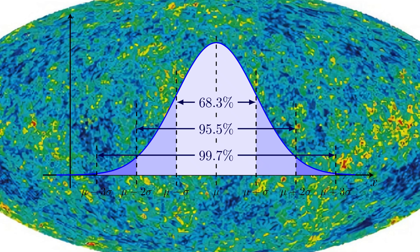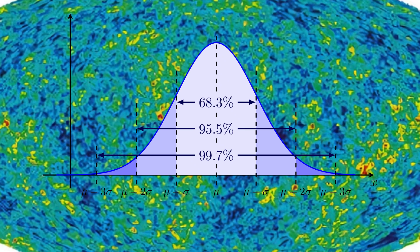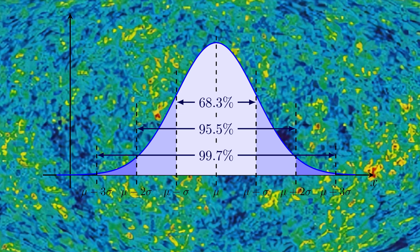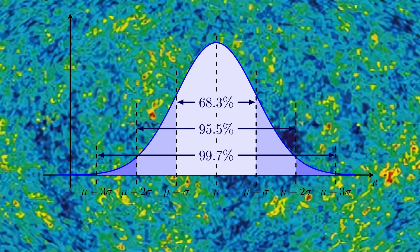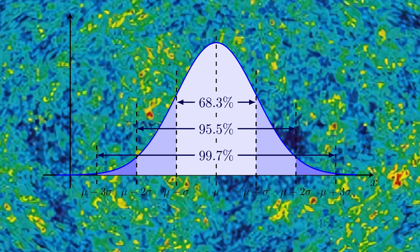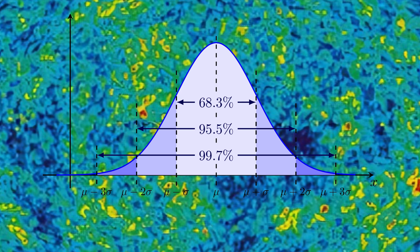The distribution of deviations can be described by a bell-shaped curve. This means that at the peak of the curve, we have average temperature values, and they are the most probable. But the further the deviation in any direction from the peak of the curve, whether in plus or minus temperature, the less likely it is to encounter such a deviation.